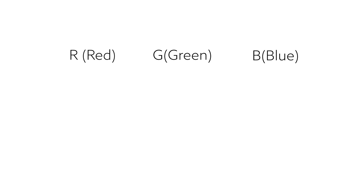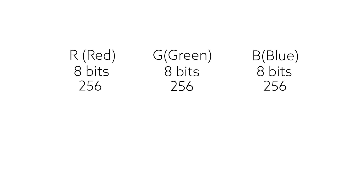And since both sRGB and Adobe RGB are RGB color spaces, each color channel — R for the red channel, G for the green channel, and B for the blue channel — each channel has 8 bits, which means each color channel can represent 256 different values. Therefore, a color photo that contains 3 color channels can have 256 × 256 × 256, which is approximately 16.7 million different colors in the photo, no matter which color space you use.